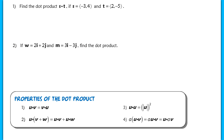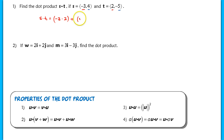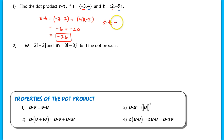Let's begin with example 1: find the dot product s·t if s = (-3, 4) and t = (2, -5). We take the product of the horizontal components plus the product of the vertical components: (-3)(2) + (4)(-5) = -6 + (-20) = -26. So the dot product s·t equals -26. Remember, this is always going to be a real scalar number.